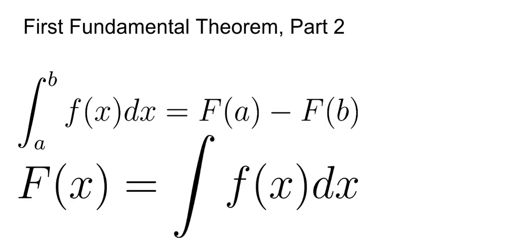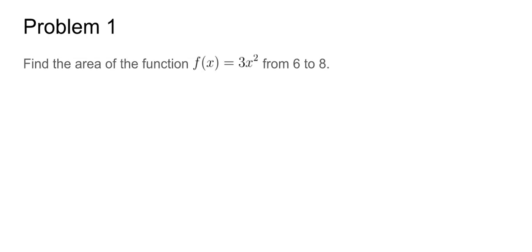Problem 1. Find the area of the function f(x) equals 3x squared from 6 to 8. This is a simple problem because we already have everything we need. We can define the integral at the endpoints of the function f(x). So we get the integral from 6 to 8 of 3x squared dx. The dx is because f(x) is in terms of x, so we need to solve for the integral in terms of x.